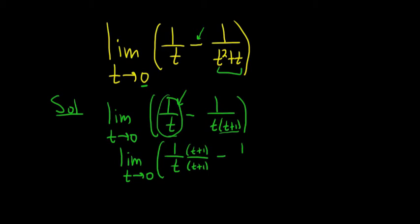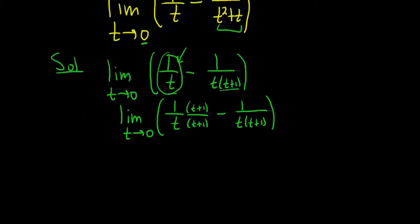We're basically multiplying by 1 so that we can actually subtract these fractions. You can only subtract fractions when the bottoms are the same, in other words when the denominators are equal. And now that's exactly what we have, right? Because here the bottom is t, t plus 1, and here it's t, t plus 1.